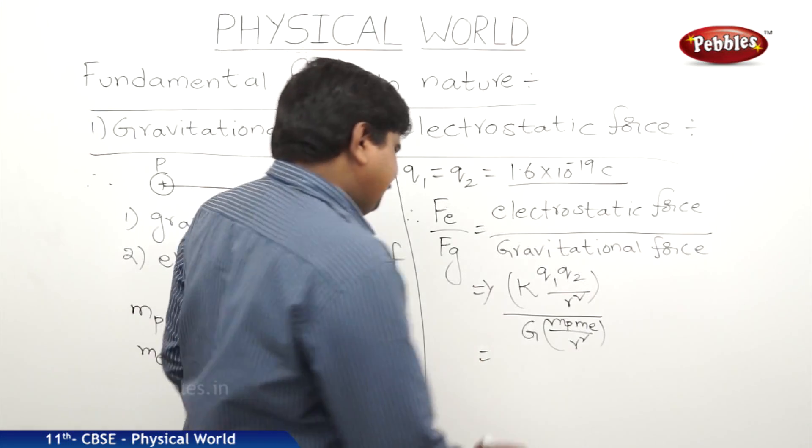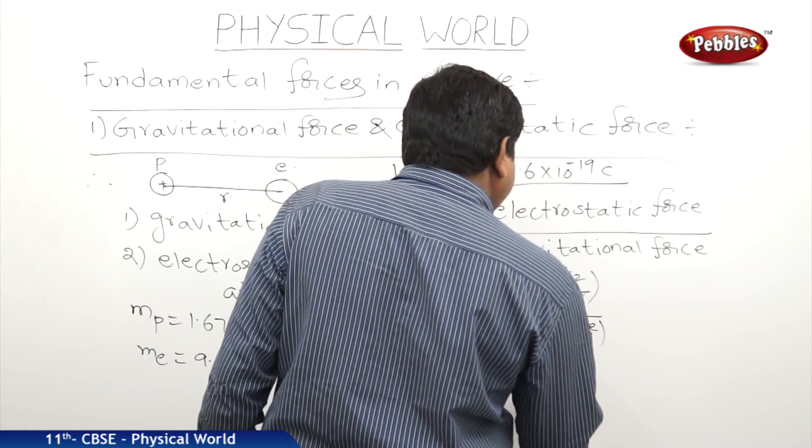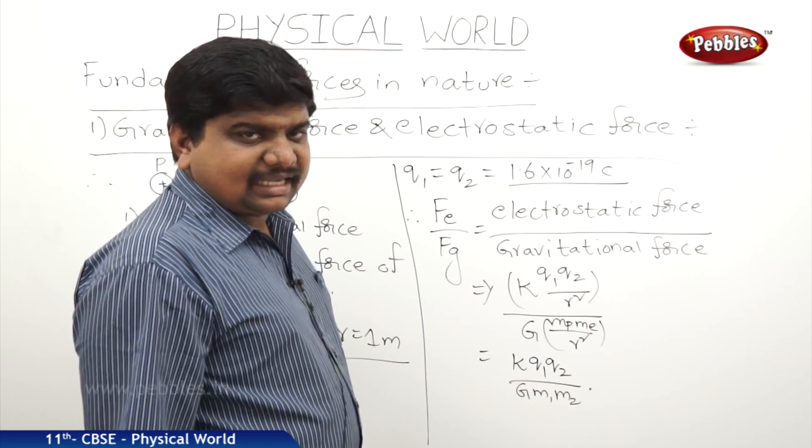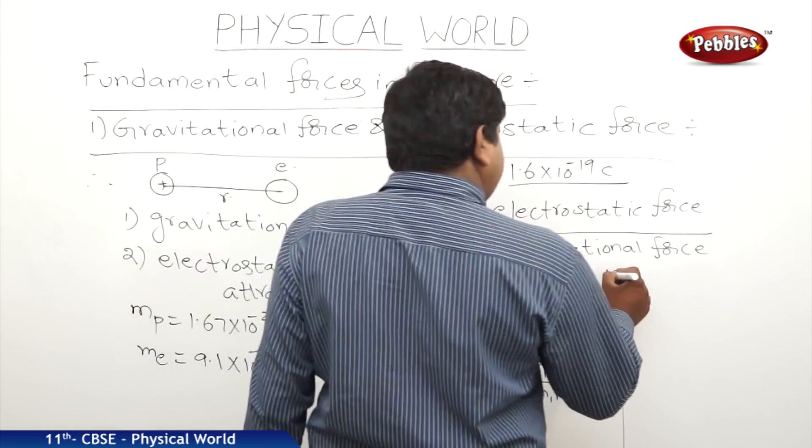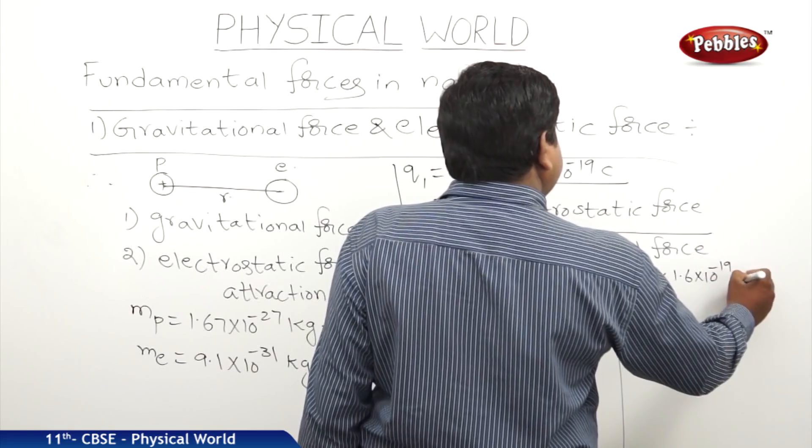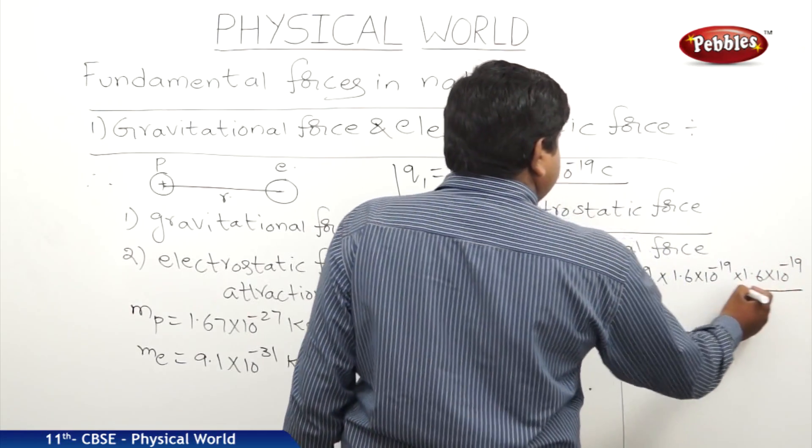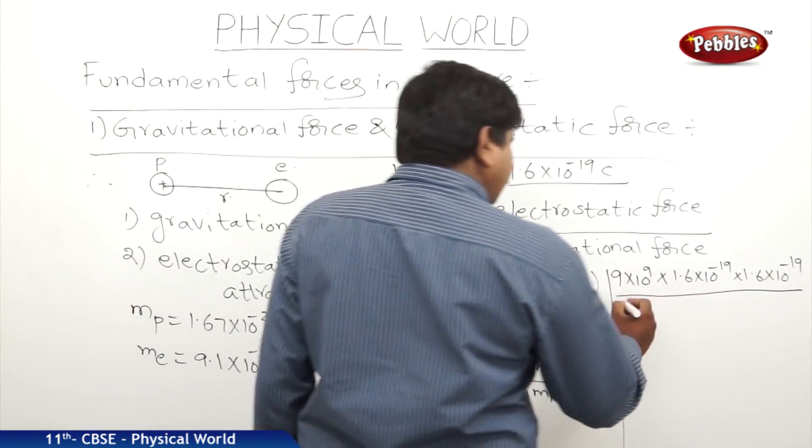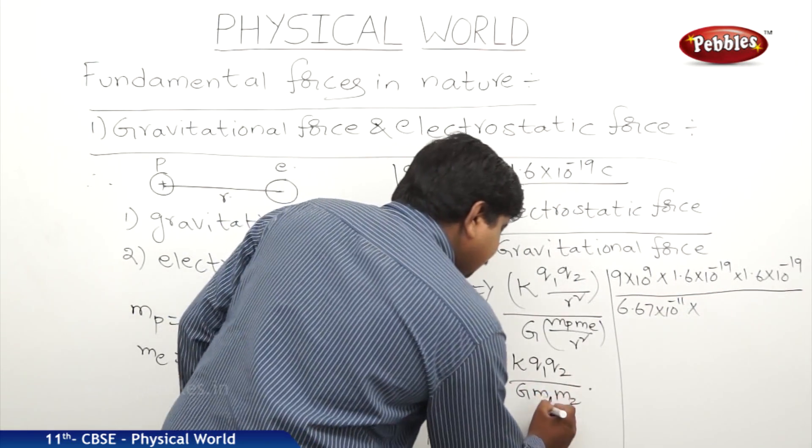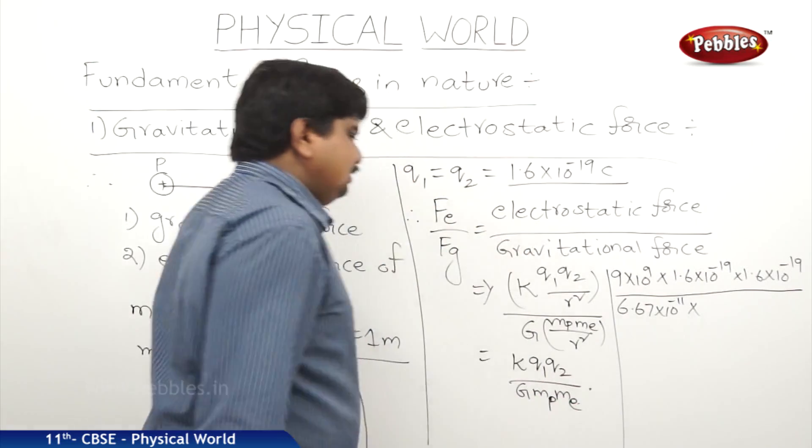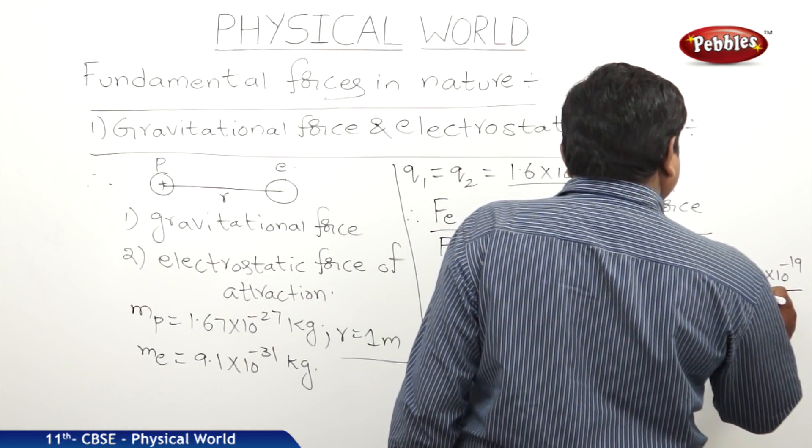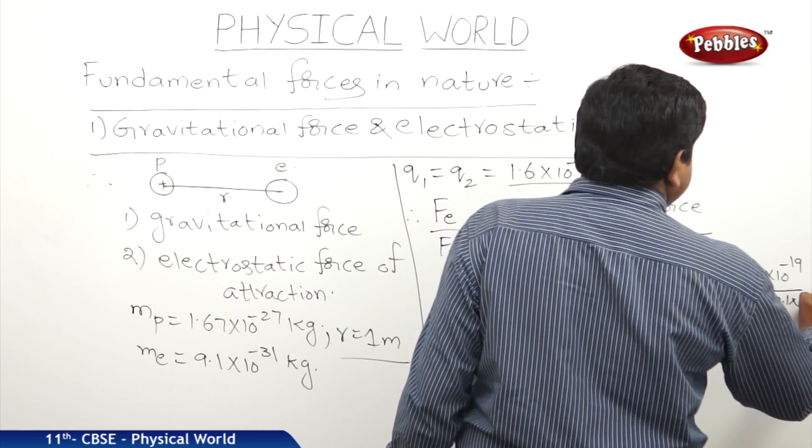We will get the equation like this: K Q1 Q2 by GM1 M2, because this R square and R square gets cancelled. Now, the K value is 9 into 10 to the power of 9. Q1 and Q2 is 1.6 into 10 to the power of minus 19 into 1.6 into 10 to the power of minus 19, whole divided by G value 6.67 into 10 to the power of minus 11 into mass of proton 1.67 into 10 to the power of minus 27 kg and mass of electron 9.1 into 10 to the power of minus 31 kg.